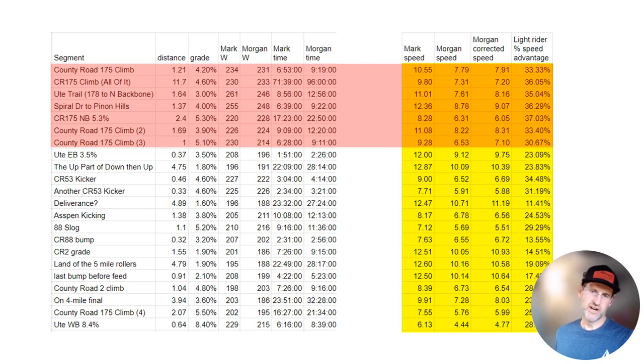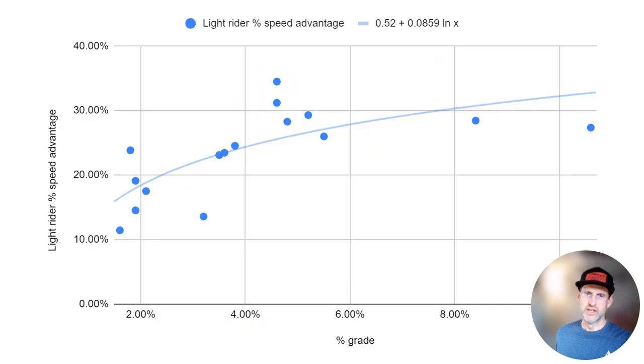It was a pretty terrible course for drafting. It was either going up or going down and it was pretty technical with mud all over. 35 to 40 miles of course was essentially mud or a small single track line through the mud.